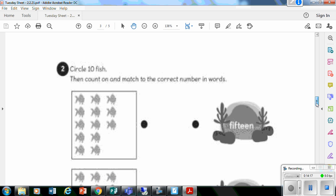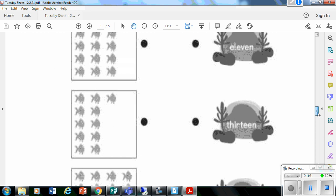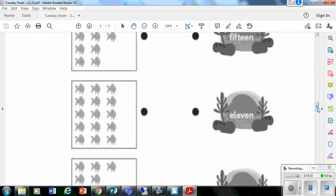Then you've got circle the fish, remember, to make your 10 and then count on. I would do the left-hand side first. So you count and write your number as a digit. And then once you've done all of these on the left-hand side, you then match them to the correct word.